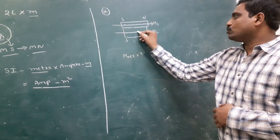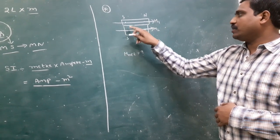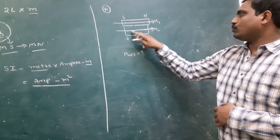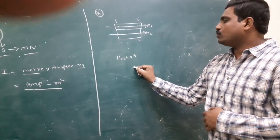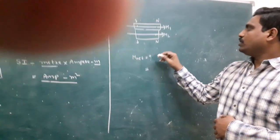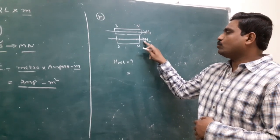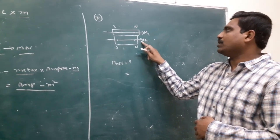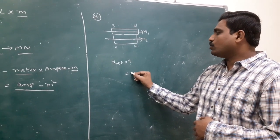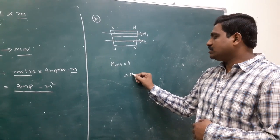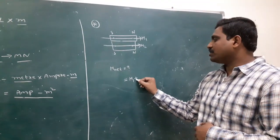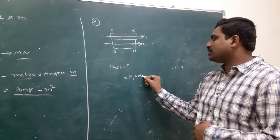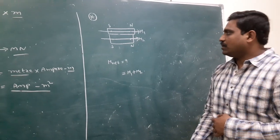The direction of magnetic moment is south to north. According to the diagram, M1 direction and M2 direction are both in the same direction. So according to vectors, when two vectors are in the same direction, we add them.